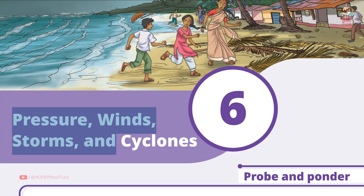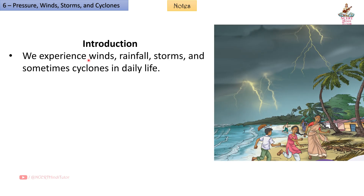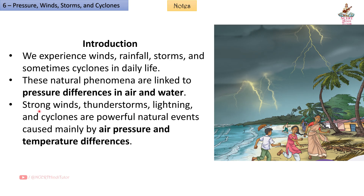Chapter 6: Pressure, Winds, Storms, and Cyclones — Short Notes and Summary from Grade 8 Science Book 'Curiosity'. Introduction: We experience winds, rainfall, storms, and sometimes cyclones in daily life. These natural phenomena are linked to pressure differences in air and water. Strong winds, thunderstorms, lightning, and cyclones are powerful natural events caused mainly by air pressure and temperature differences.